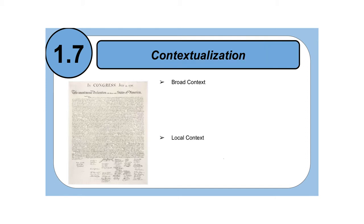The first one is broad context and the second one is local context. Let's look at local context first because it's the easier one. The local context is basically the four W's, which are who, what, when, and where. Just those four basic W's.